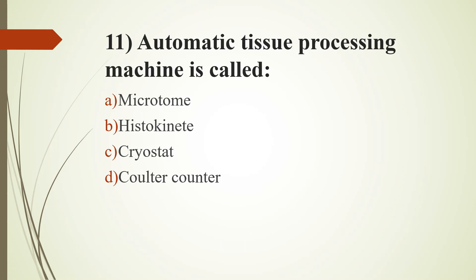Eleventh question. Automatic tissue processing machine is called: Option A, Microtome; Option B, Histokinette; Option C, Cryostat; Option D, Coulter Counter. Answer is Option B, Histokinette. In the histopathology laboratory, the automatic machine for tissue processing is called the Histokinette. Microtome is for section cutting of tissue at 3–5 micrometers. Cryostat is for cutting tissue at low temperature, typically minus 15 to minus 30 degrees Celsius. Coulter Counter is used for complete blood count in hematology, using the impedance measurement principle.